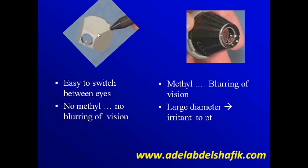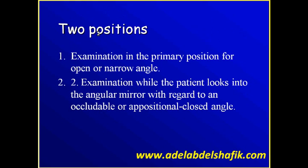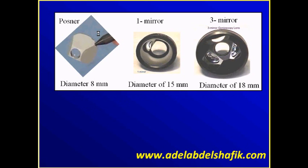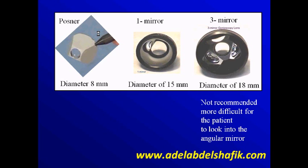The advantages of the Puzner lens are: it's easy to switch between eyes, no methyl is used so there is no blurring of vision. On the other hand, the three-mirror or one-mirror Goldman requires methyl which causes blurring of vision, and has a large diameter which is irritating for the patient. We usually do the examination with the patient looking in the primary position, but in certain situations we ask them to look toward one of the mirrors for more detail. The three-mirror is the least preferred lens due to its large diameter and greater patient discomfort. One advantage is that it can be used to press on episcleral vessels for better visualization of the canal of Schlemm. But otherwise, it is better to use the Puzner lens or the one-mirror Goldman.